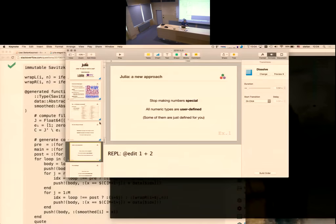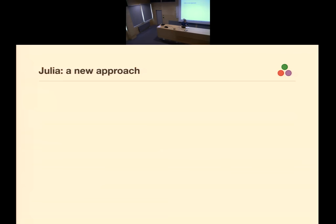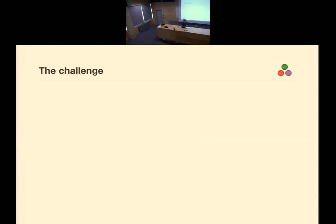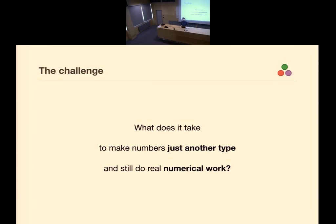Back to the presentation — I'm switching between slides and demo. So here's the challenge: what does it take to make numbers just another type and still do real numerical work? One of the things we just saw is that basic integer and floating point arithmetic have to be really fast — that's fundamental.